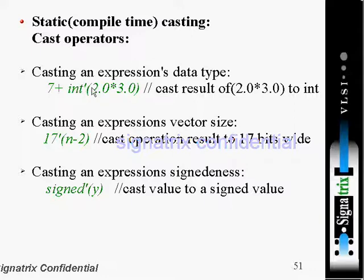Casting an expression's vector size: for example, 17'(n-2) casts the operation result to 17 bits wide. After the end of the result, it will have 17 bits. Suppose 32 bits are there, but the result should be reduced to 17 bits wide according to the directive. It will take from the LSB—the lower 17 bits.